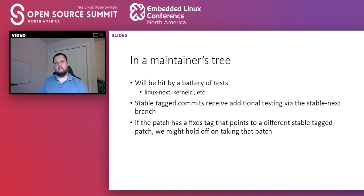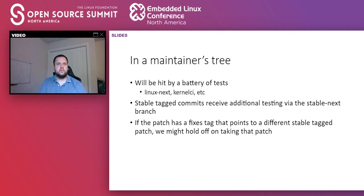Once the patch makes it into Linux Next, we also have a derivative tree named stable-next, which contains just the stable-tagged commits that live in Linux Next but not in the main Linux Next tree. The idea is that we want to make failures in testing of stable-tagged commits very obvious — we don't want those failures to be swallowed by other failures in Linux Next. The stable-next tree lets us clearly see failures caused by stable-tagged commits and address them before they're pulled into the stable queue or released.